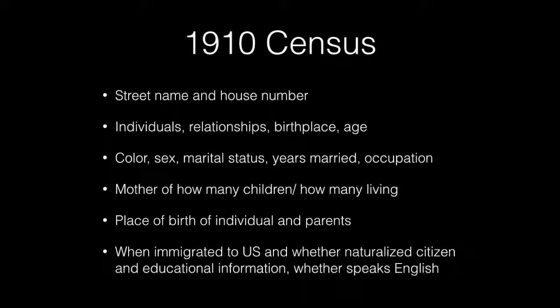The 1910 Census shows the street name and house number, the individual's relationships, birthplace, and age, the color, sex, marital status, years married, and occupation, the number of children a mother has had and how many are living, the place of birth of the individual and the parents, when they immigrated to the United States, whether they are naturalized citizens, educational information, and whether they speak English.